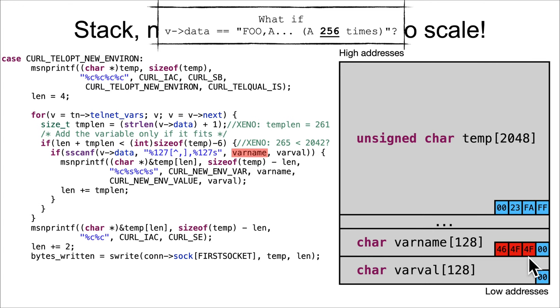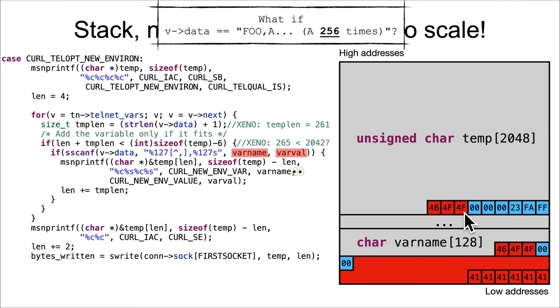Then when it gets into this interpolation, we have constant value zero, varname foo, then the constant value one, and then varval equal to the 127 A's. So this is the problem - it's moving too far forward because they didn't actually fill in 265 characters, and so it's going to walk forward and then temp of len is going to stick these two constant characters somewhere farther up the stack.